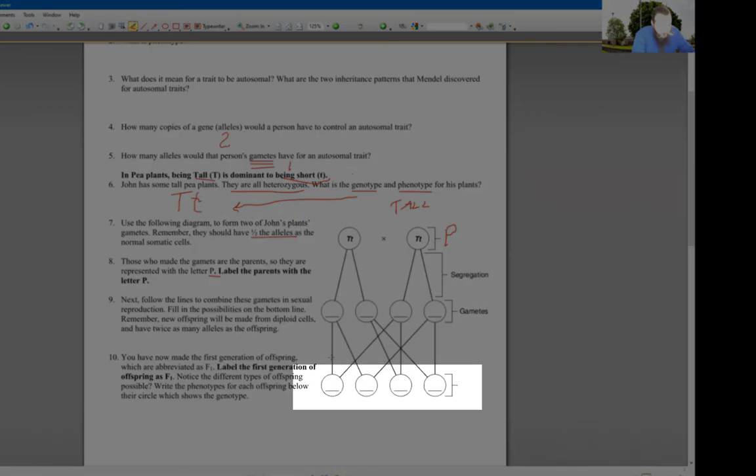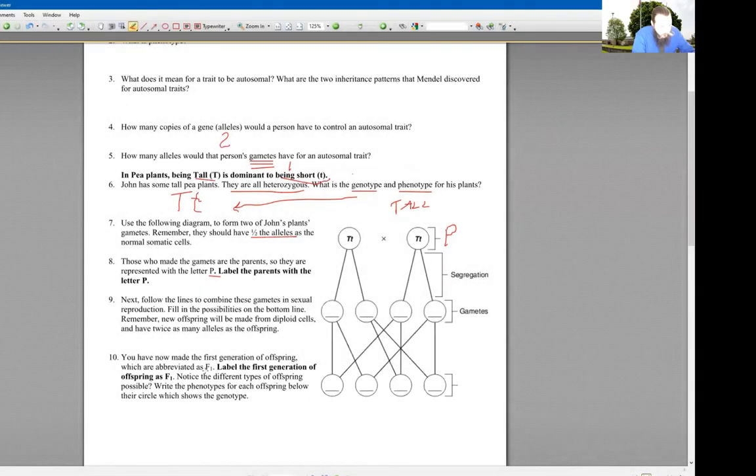And these plants down here, that's the offspring. And we'll label that as F1, because it's the first generation of offspring, a little subscript one. If we were to take any of these two plants and cross them, like have them reproduce with each other, that would make another generation. We call those the F2. You'll see those in later problems.